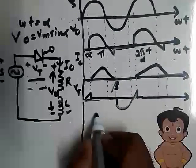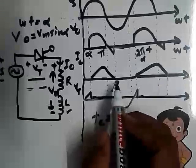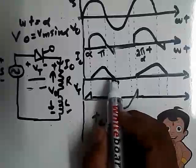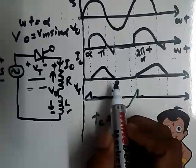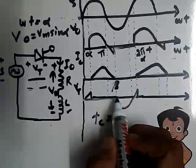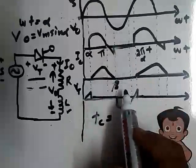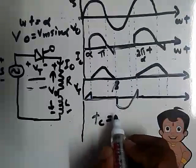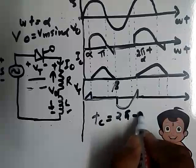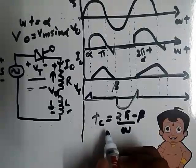Now we have to define what is the circuit turn-off time in this case. It is the time up to which the SCR is subjected to reverse voltage after the current through the thyristor becomes zero. Here, at point β the current through the thyristor becomes zero, and from β to the next 2π we are applying reverse voltage. So the net reverse voltage applied duration is (2π − β)/ω. This is the circuit turn-off time of this circuit.